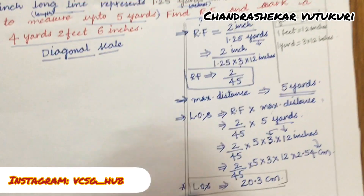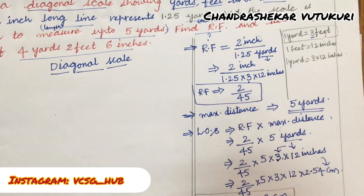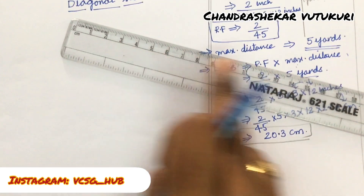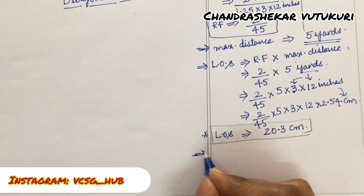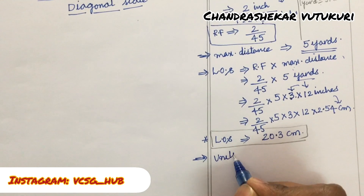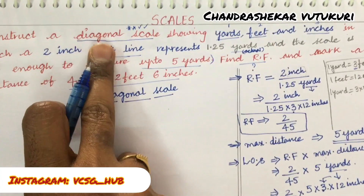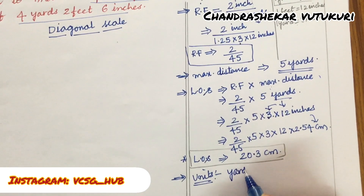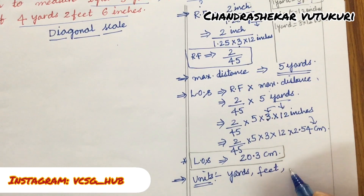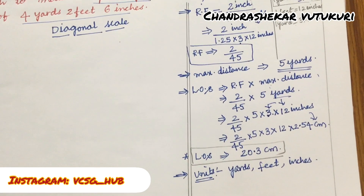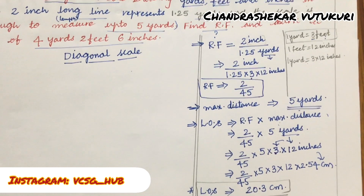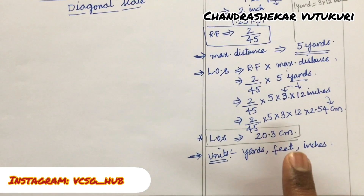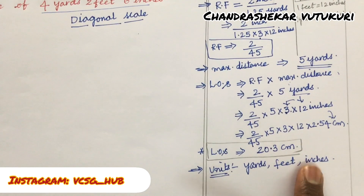A video on units and conversions has been posted — please work through it. Now we can plot a 20.3-centimeter scale. The three units here are yards, feet, and inches: 1 yard equals 3 feet, and 1 foot equals 12 inches. The marking distance given is 4 yards, 2 feet, and 6 inches.